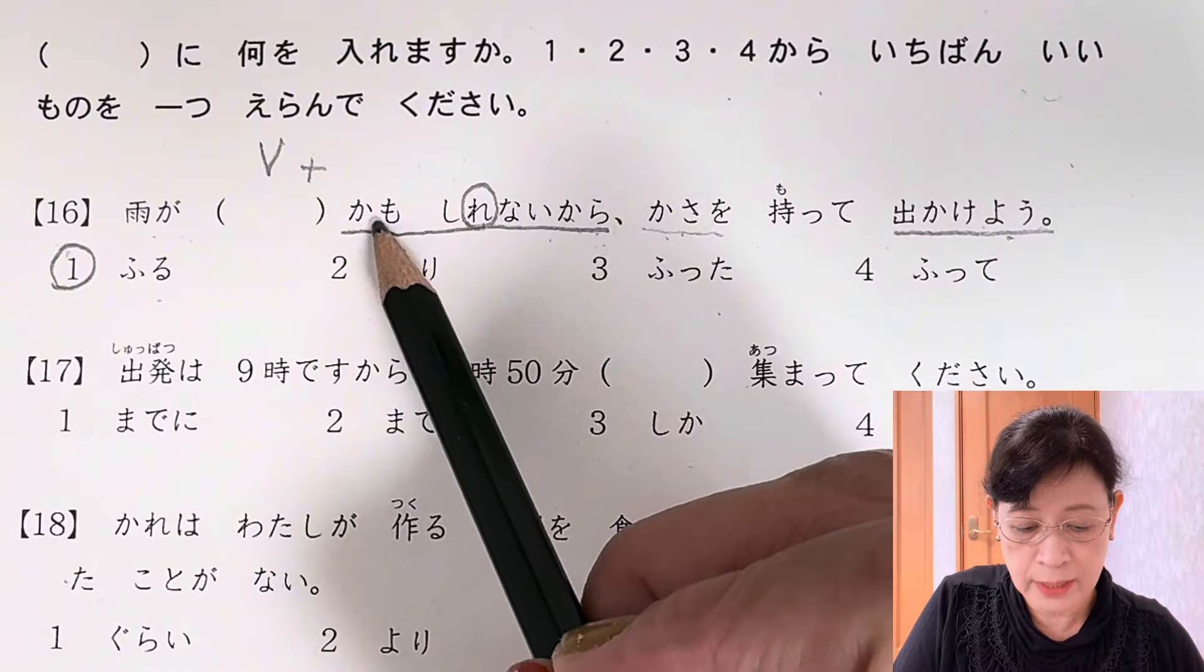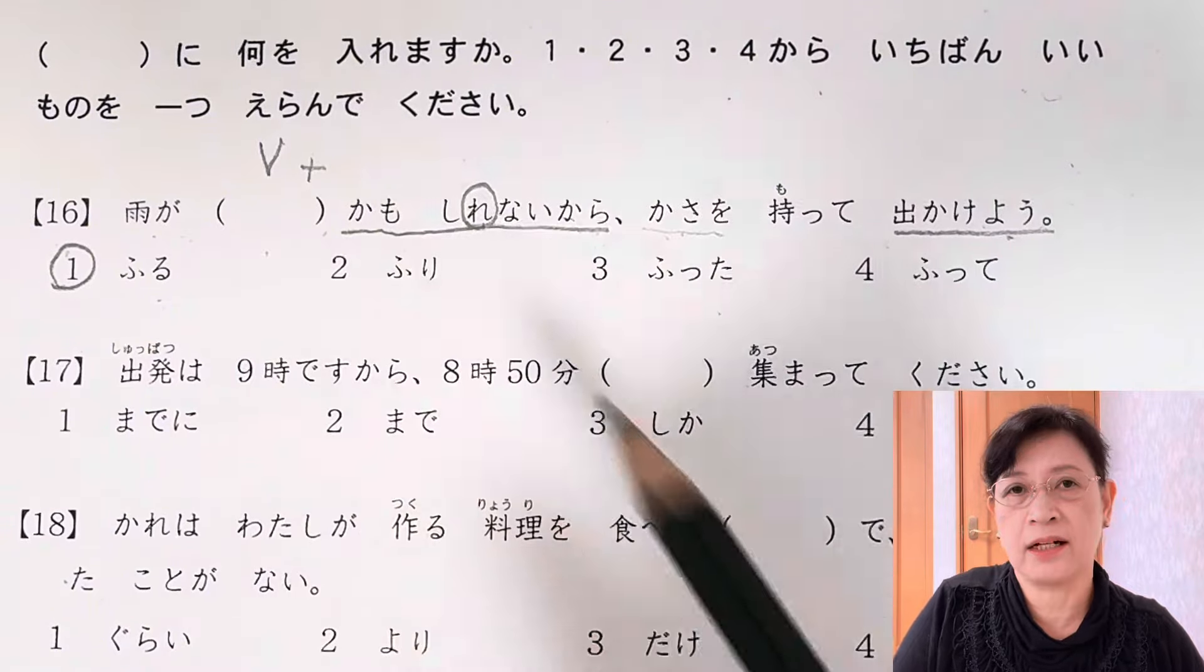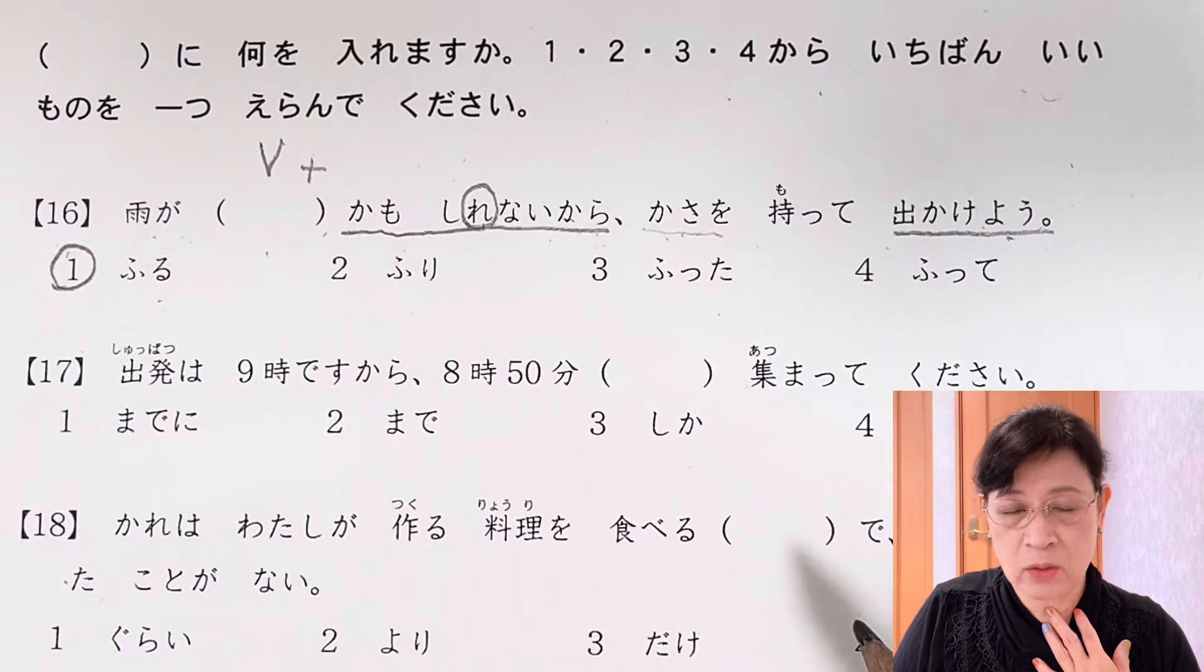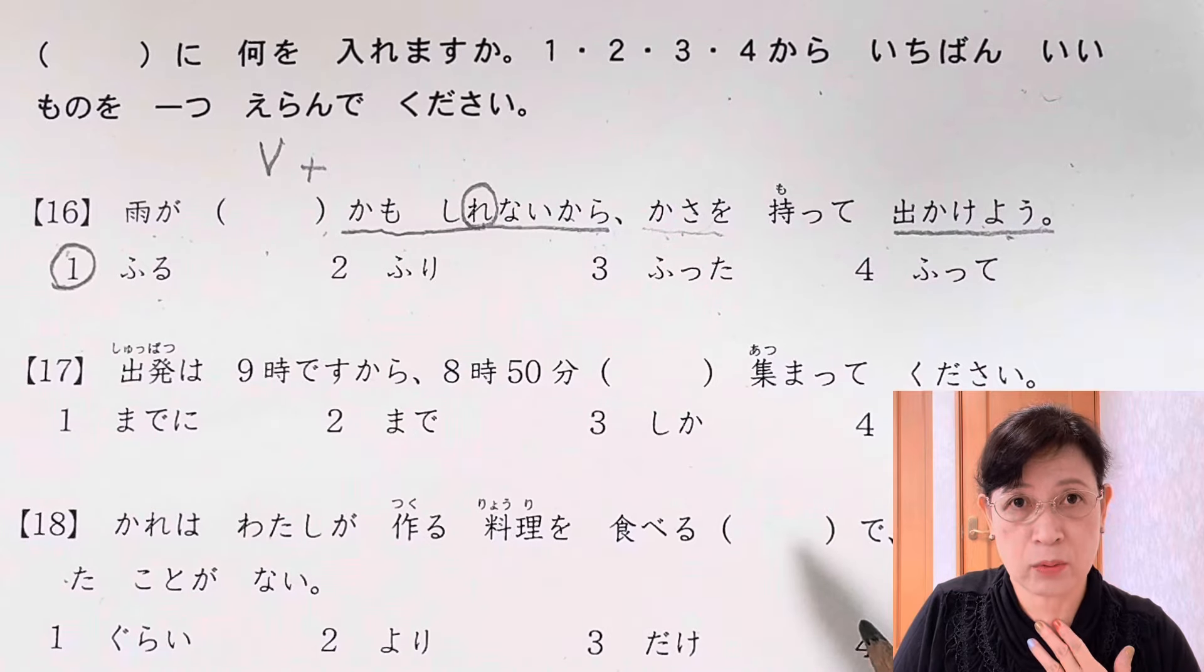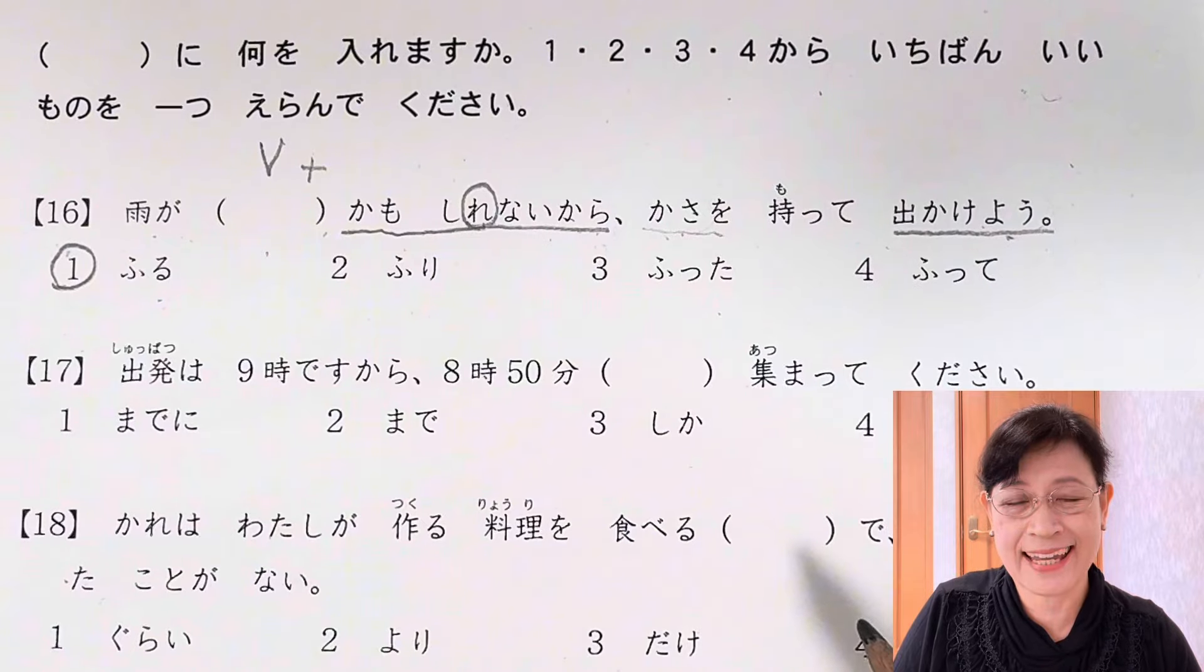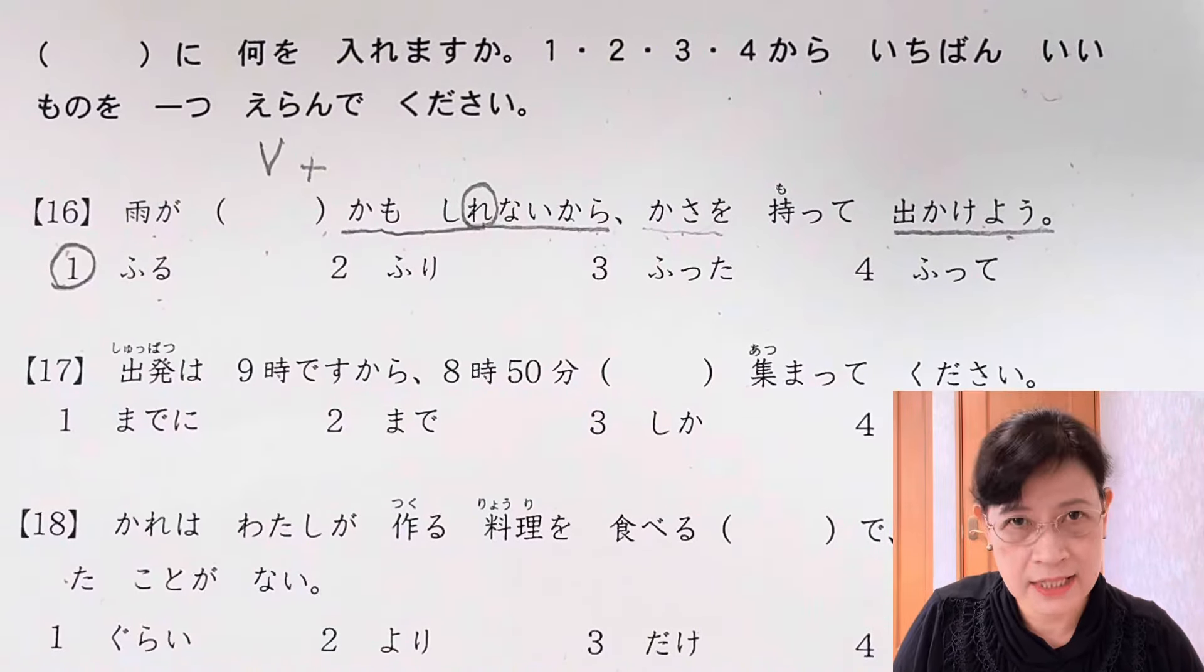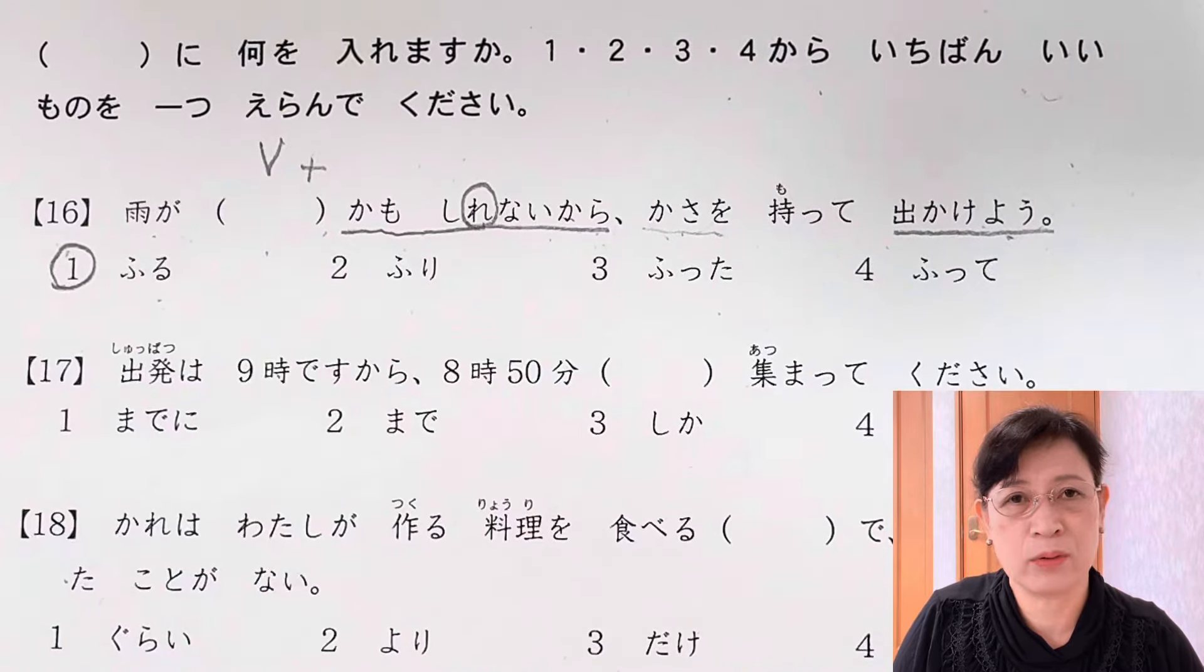This means to express possibility of something. Another example could be 朝から喉が痛い, so 風邪をひいたかもしれない - I have a sore throat since this morning, so I might have caught a cold. Another example could be 来週は忙しいから、パーティーに行けないかもしれない - I am busy next week, so I might not be able to go to the party.